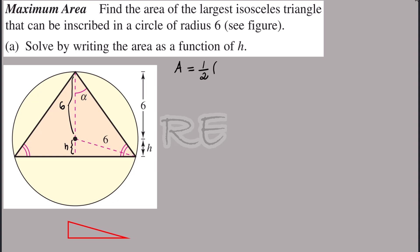The area of a triangle is half of the base times the height. The height is given and it's equal to h plus six. The base can be found from the smaller triangle in red, which has a height of lowercase h, and the hypotenuse will be the radius — so the hypotenuse is six.